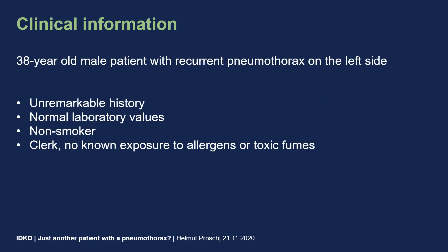This is the story of a 38-year-old male patient who presented with a recurrent pneumothorax — in fact, it was the second pneumothorax on the left side. The pneumothorax was initially treated with drainage, and a couple of months later he presented again with a pneumothorax. His history was otherwise unremarkable, and all his lab values were normal. He reported to be a non-smoker.